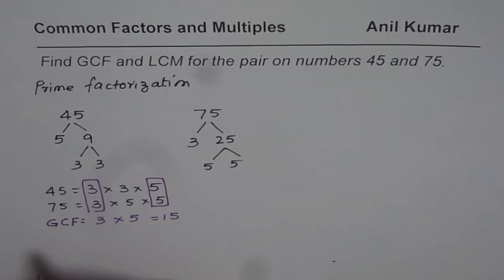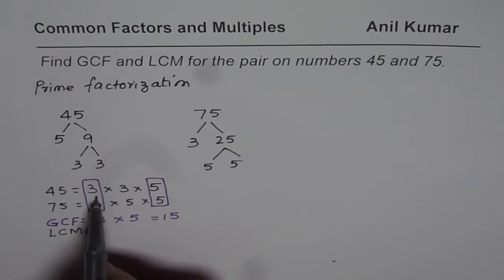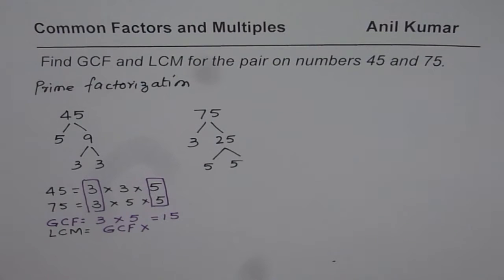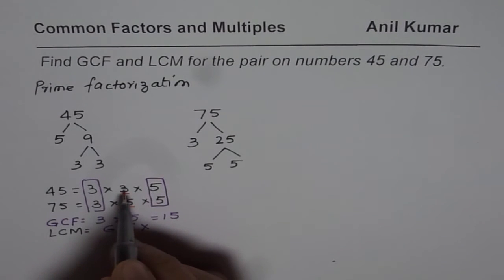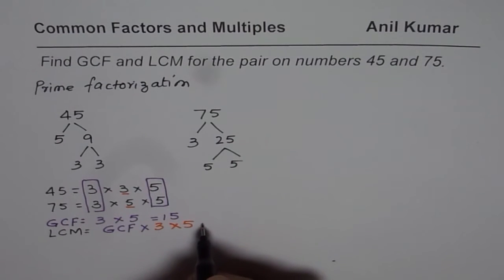Now let us see how to find the least common multiple. The least common multiple is more than the greatest common factor. To find the least common multiple, we start with the greatest common factor and multiply by the remaining factors. In our case, the remaining factors are 3 and 5, so we will multiply the greatest common factor by 3 and 5.